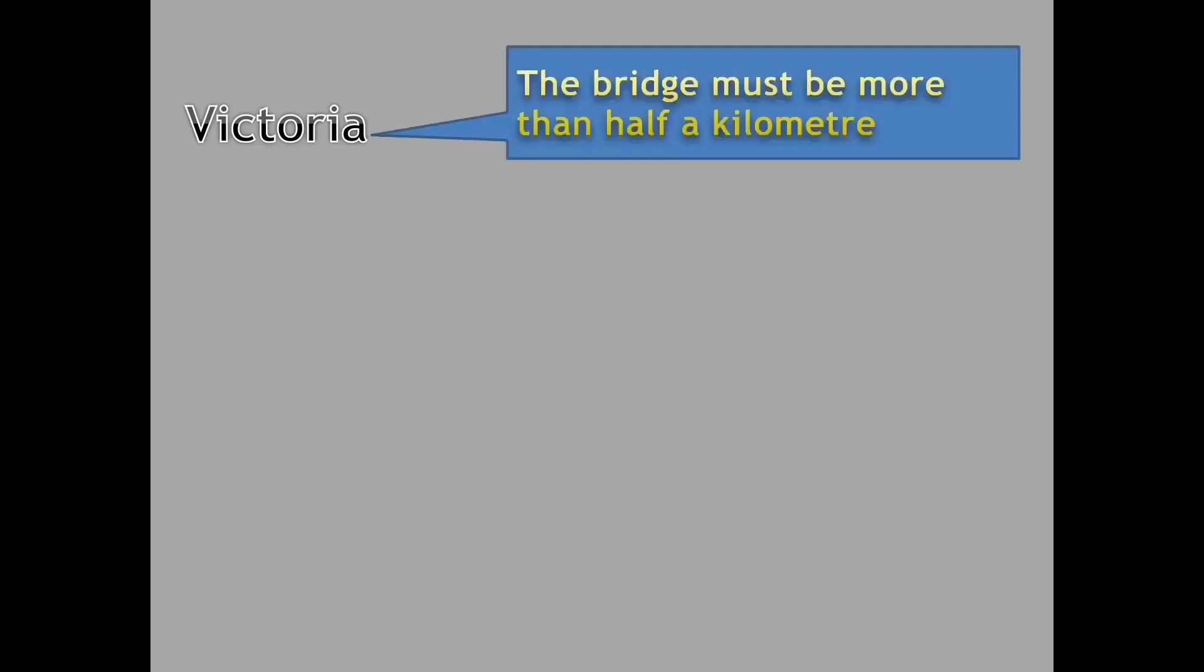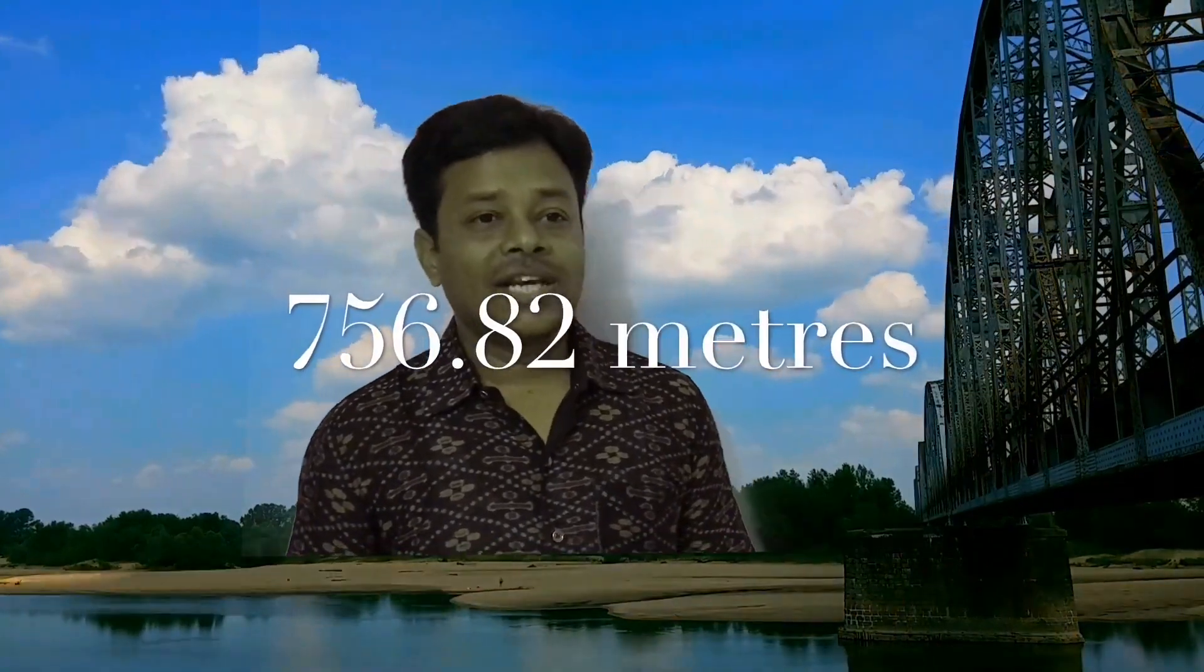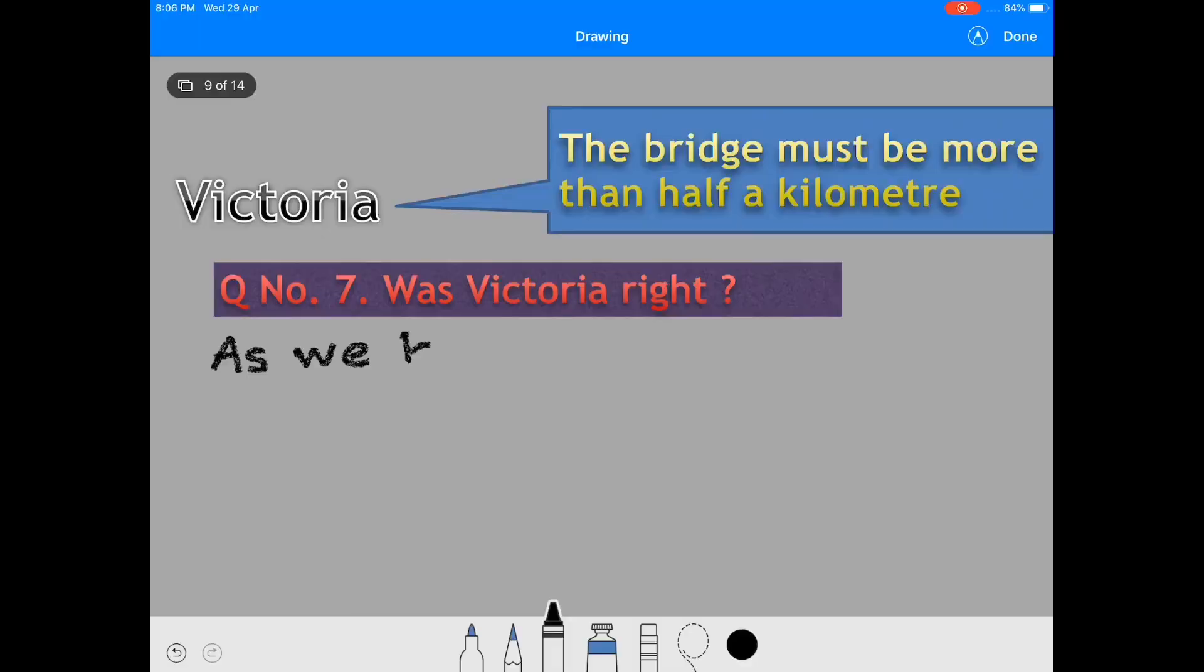When the students were crossing a bridge on the Narmada river, they noticed the river was very wide. Victoria: 'The bridge must be more than half a kilometer.' They saw one board; it is written the bridge is 756.82 meters long.